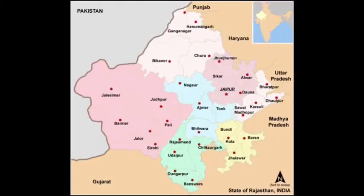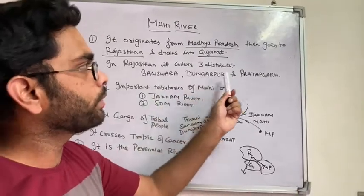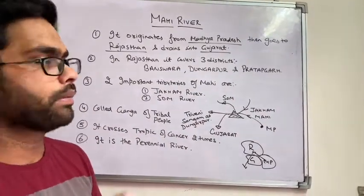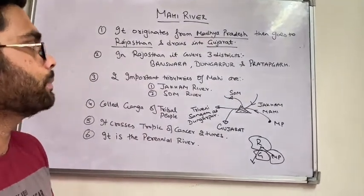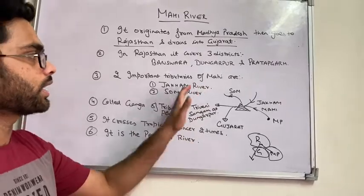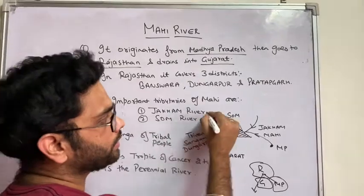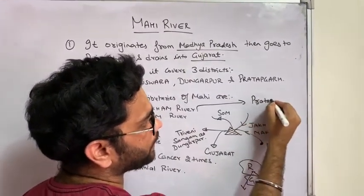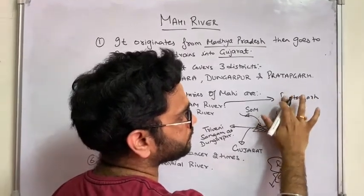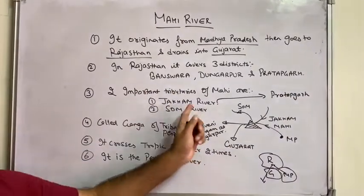In the map, the southern part of Rajasthan comprises 3 districts: Banswara, Dungarpur, and Pratapgarh. The Mahi river passes through these 3 districts. The 2 important tributaries of the Mahi are the Jaakham river and the Som river.